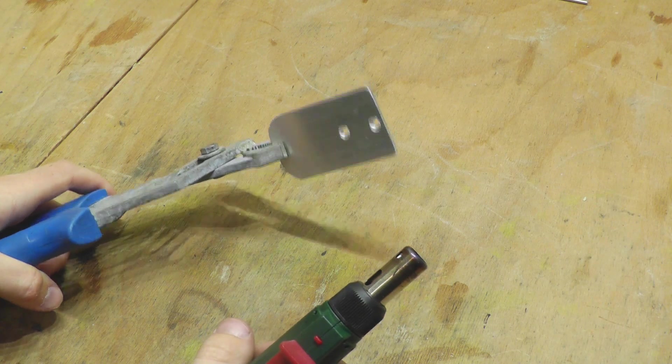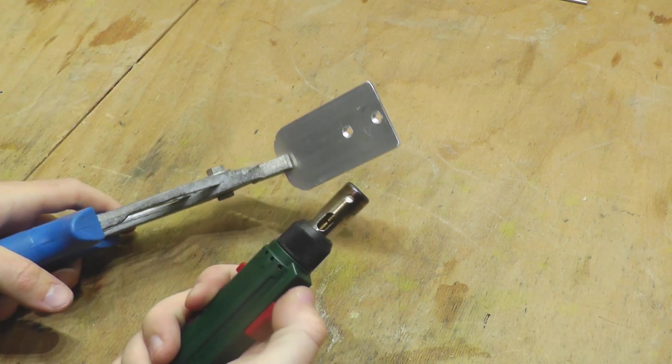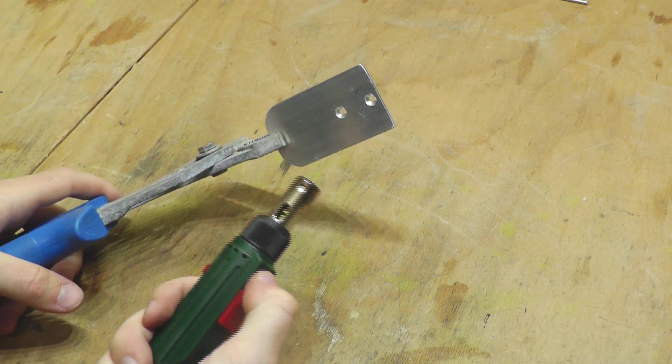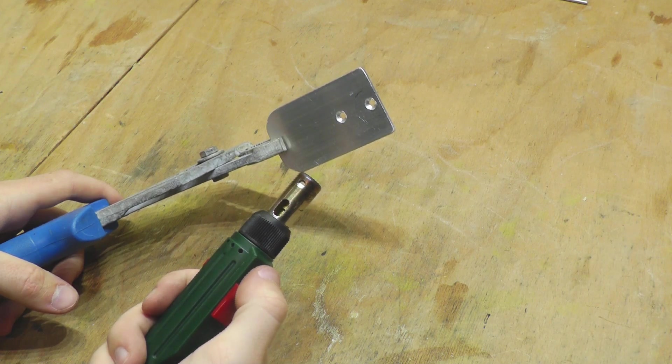One more important step before you can bend the right plate is to heat it up, to anneal it and make the bending easier. I will use a torch for this and then let the aluminum plate slowly cool down.